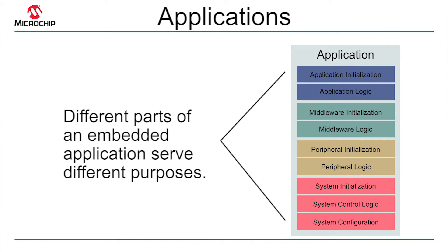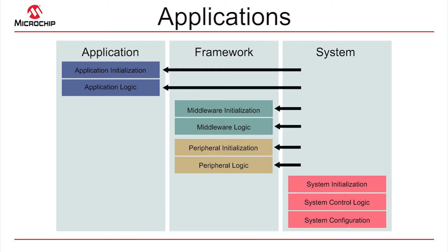Let's take a quick look at an MPLAB Harmony application. Really, any embedded application can be broken down into these same basic building blocks: your general application logic, middleware layers, peripheral libraries, and peripheral control logic, as well as general system configuration definitions and basic system control logic — the simplest of which is a while-one super loop or your RTOS logic.